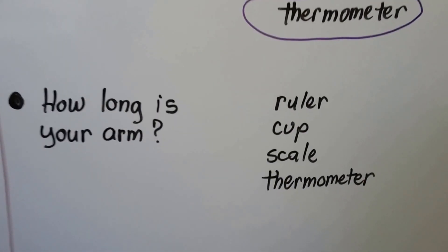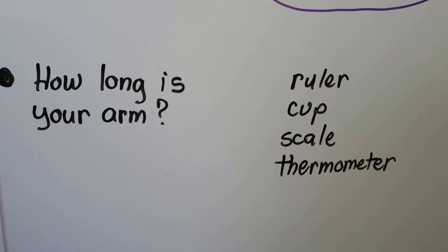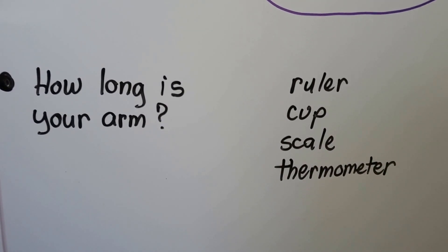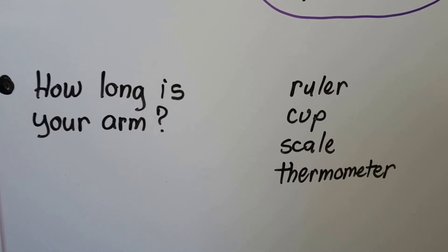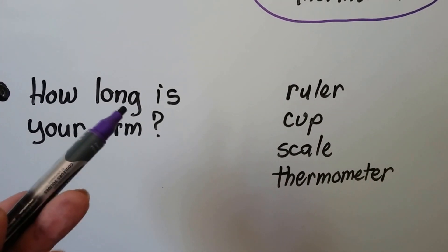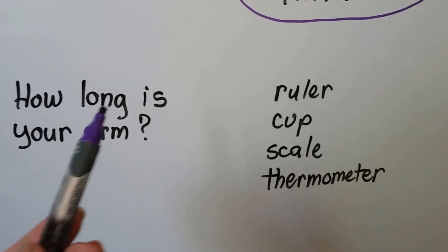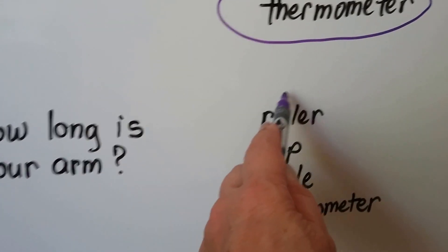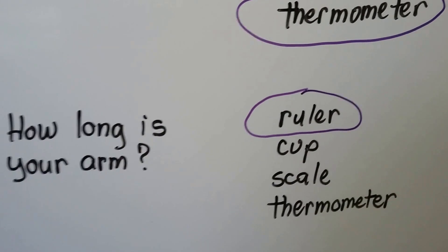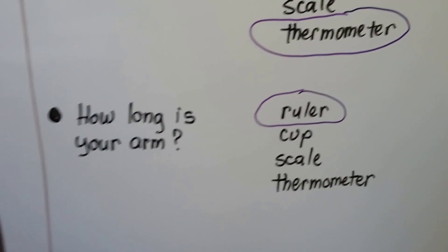How about if you wanted to know how long your arm is? Would you use a ruler, a cup, a scale, or a thermometer? How long something is refers to its length, and if we wanted to know the length of something, we would use a ruler — we'd see if it was inches or centimeters, and then we'd know how long it is.